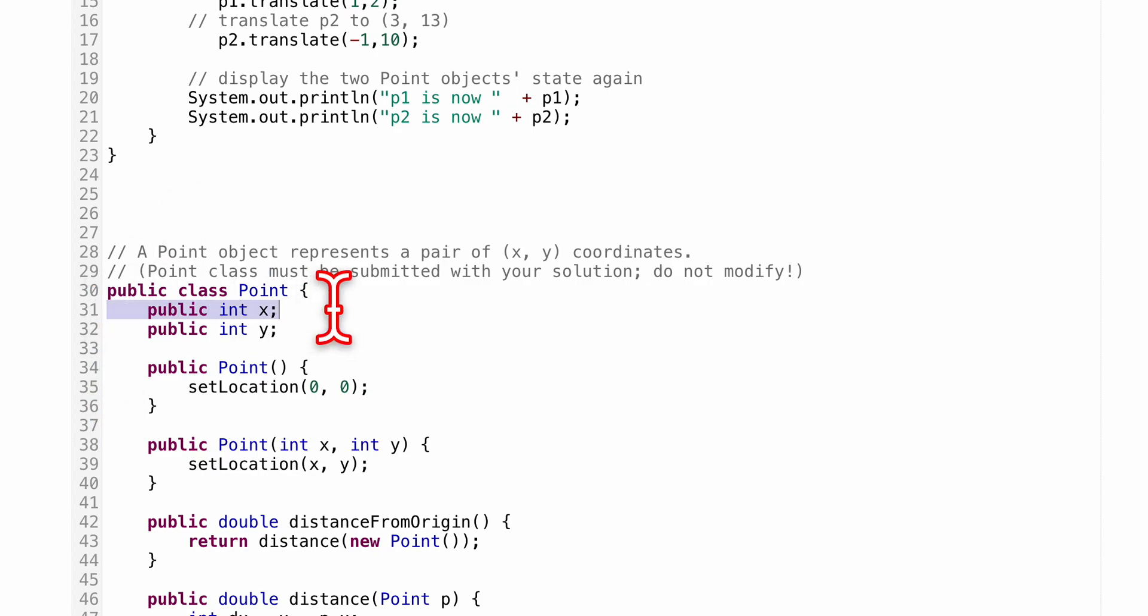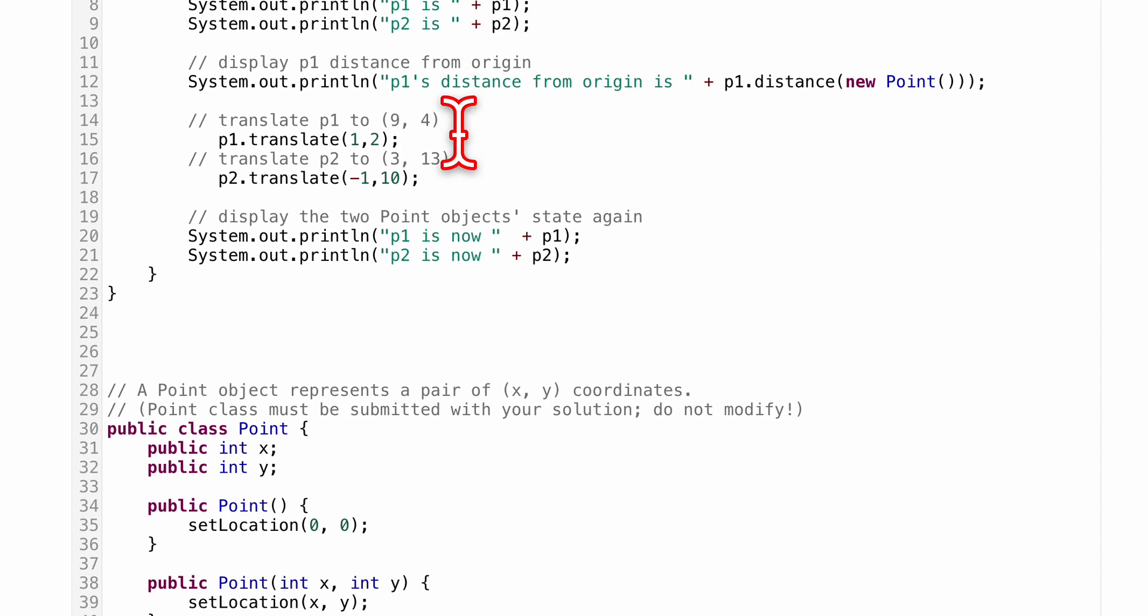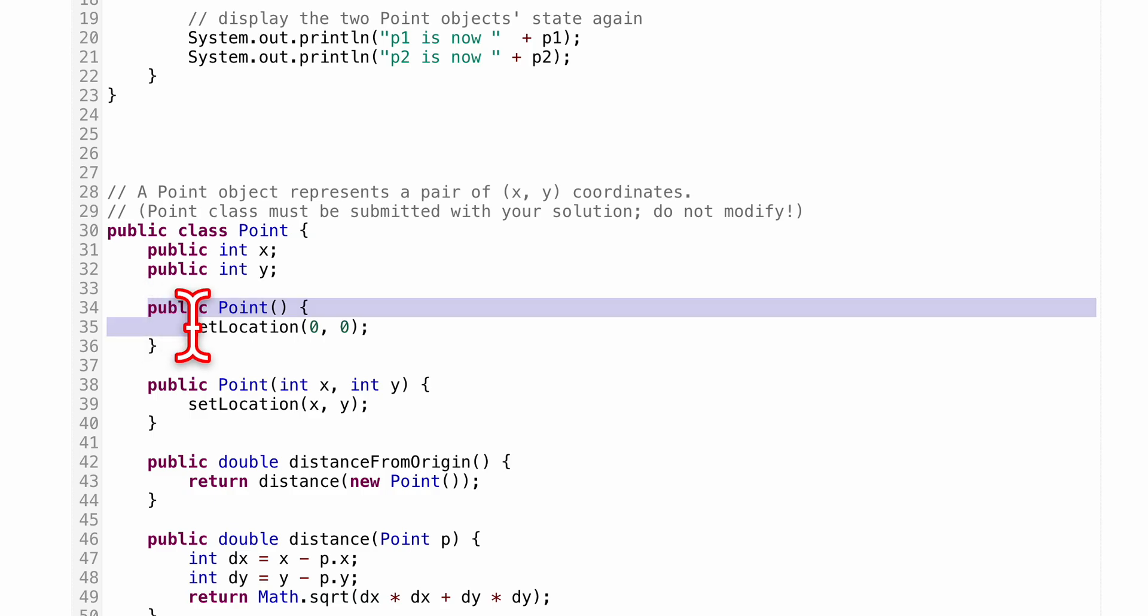Constructors are used inside of classes. When we initially make an instance of our object, we can choose to pass something in or not. We have a default constructor that has nothing passed in; it automatically sets a location to 0, 0. Or we can have something passed in that will set these variables.